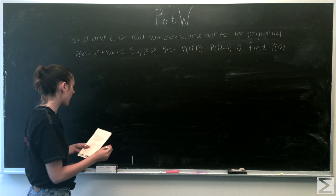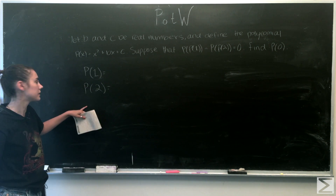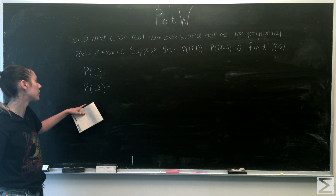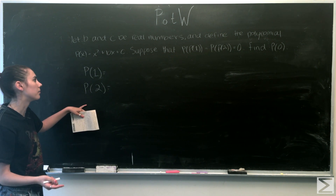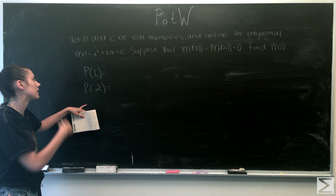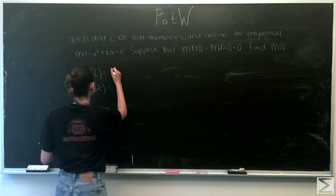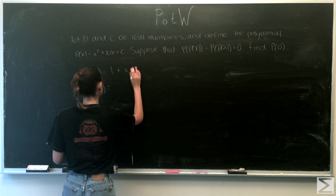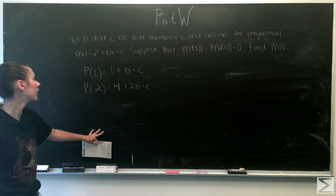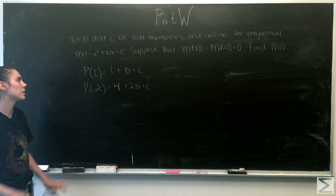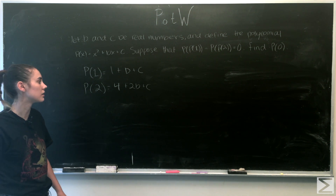Let me just write that out. Substituting 1 and 2 into p(x), we get p(1) = 1 + b + c, and p(2) = 4 + 2b + c.